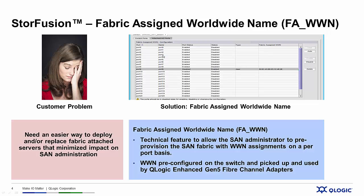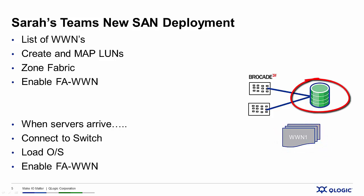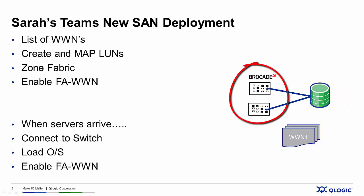When the servers and the adapters arrive, all that's required is to configure the adapters to enable Fabric Assigned Worldwide Name. Sarah's team needs to create a list of worldwide names to assign to each server, create and map LUNs in the storage device to those worldwide names, then log into the Brocade Fabric, enable Fabric Assigned Worldwide Name, and zone that fabric — making all the connections as if those servers were already physically connected to the environment.